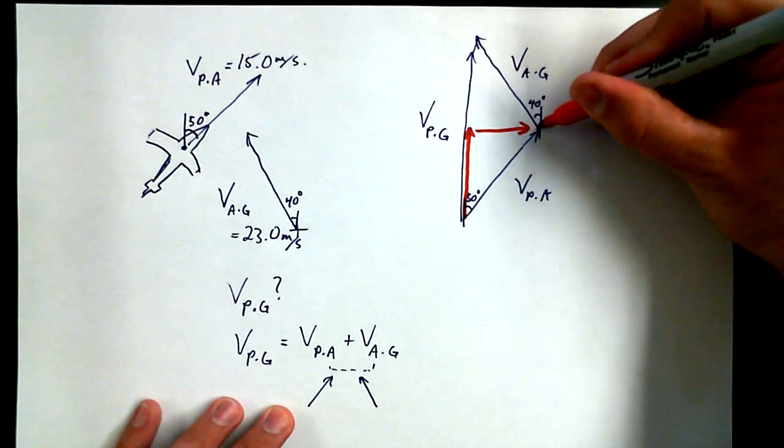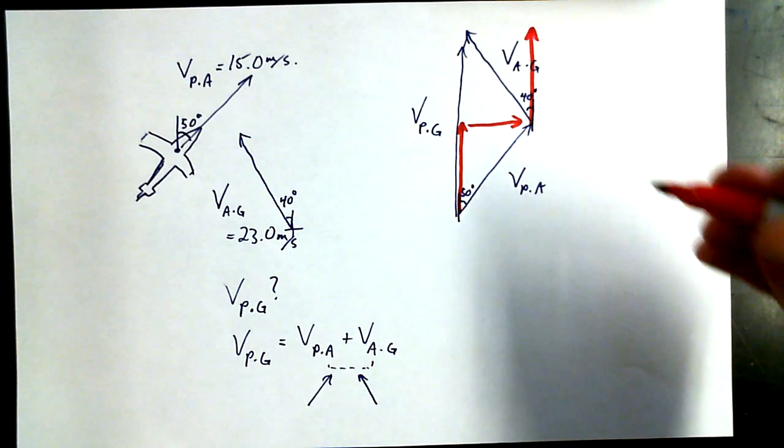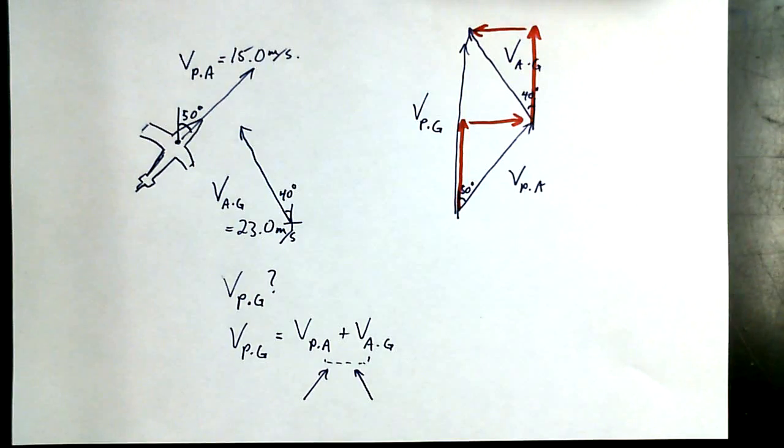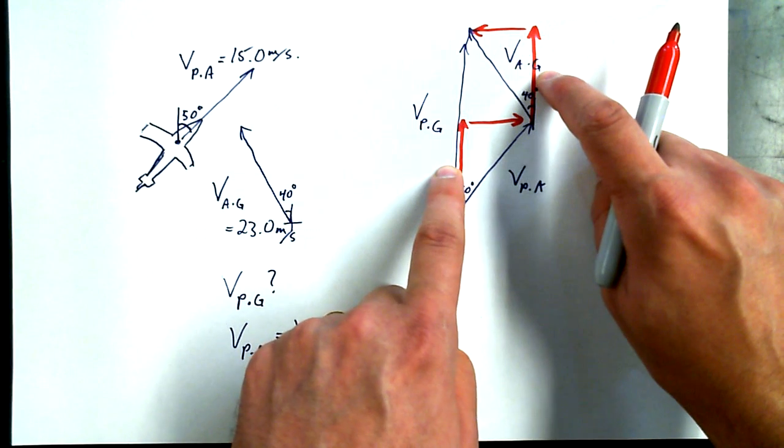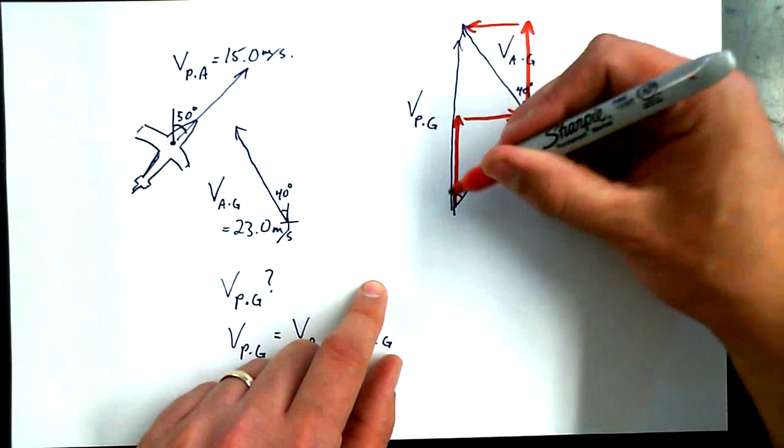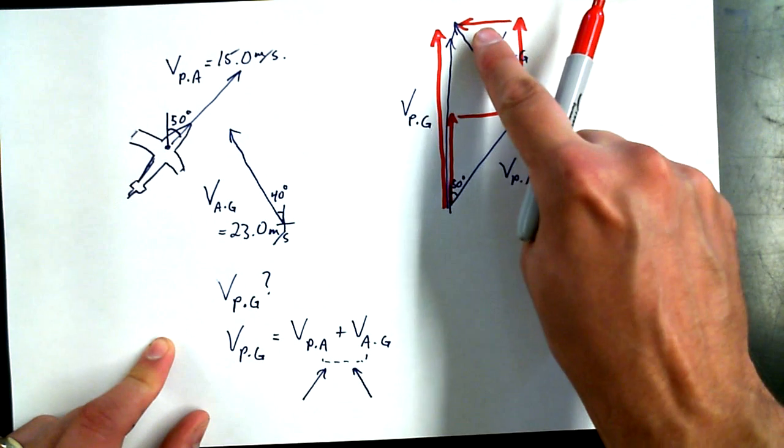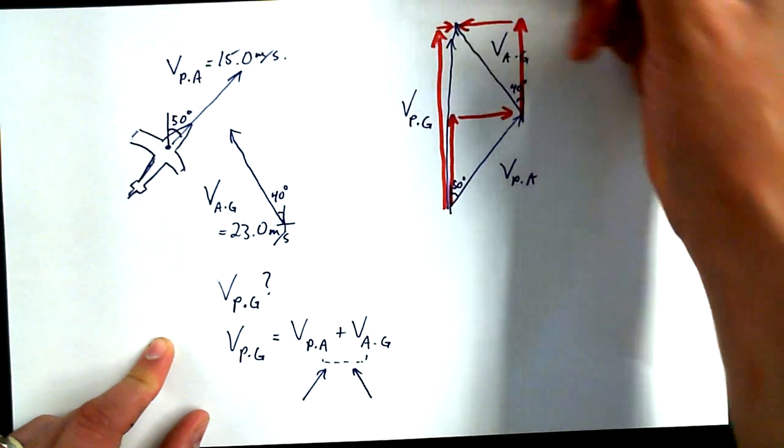I could find the Y component of this vector using SOHCAHTOA and I could find the X component of this vector again using SOHCAHTOA. I would add up the Y's to get the total Y for this guy, and I would add up the X's. One of them might be positive, one of them might be negative, to get the total X vector for that guy.